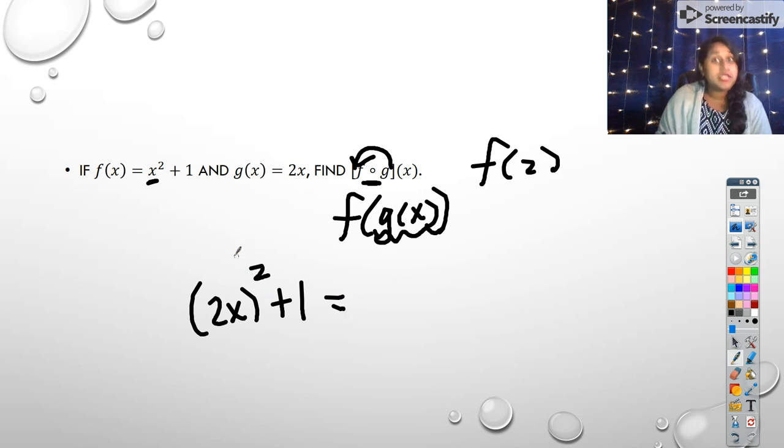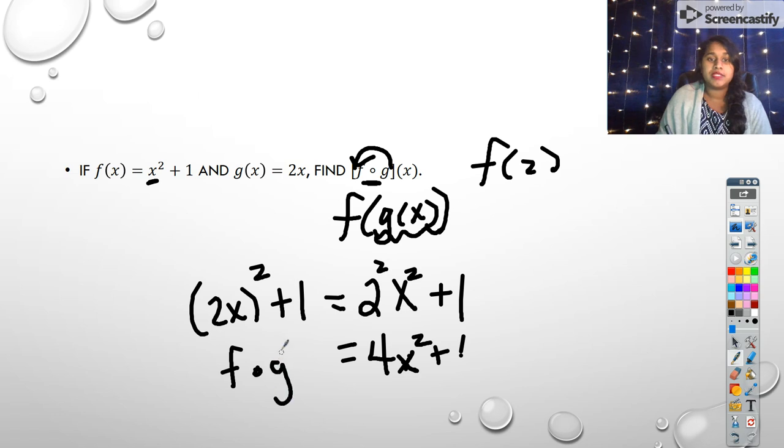Well, we don't distribute exponents. However, this is a property of exponents that says 2 squared and x squared is the same as this, plus 1. If I simplify that down, that becomes 4x squared plus 1. So this is F composition G of x.